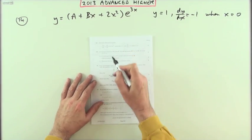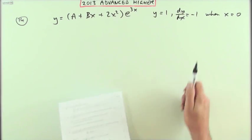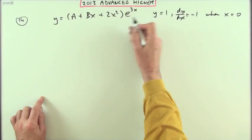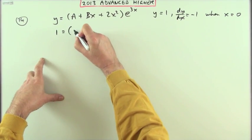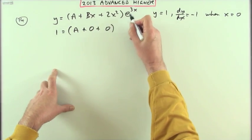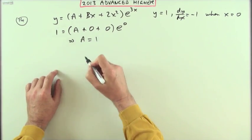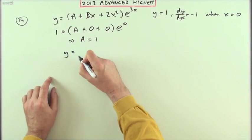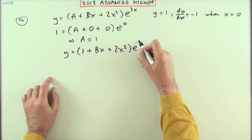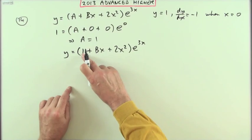You'll have to find what A and B are. When x = 0, y = 1. y = 1 when x = 0, so that term will disappear, that term will disappear. That will go to 0, e^0 = 1, so A = 1. I can immediately feed that in. So y = (1 + Bx + 2x²)e^(3x). There's no point letting A run around and annoy you when you can pin it down.